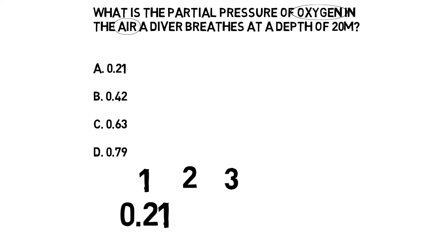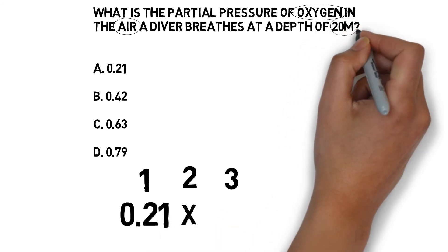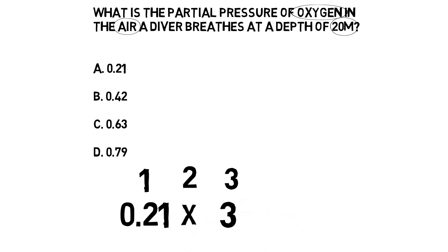The next part of our process is to decide whether we multiply or divide. In partial pressure questions, you always multiply — it's as simple as that. There's no decision to be made: when you have a partial pressure question, instantly think multiply. The final thing we need is the depth. At 20 meters in salt water, the pressure is 3 atmospheres, and that goes in step three.